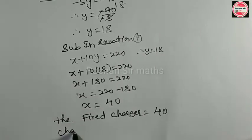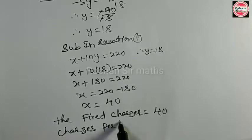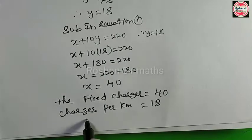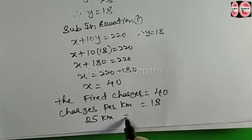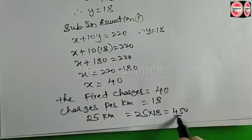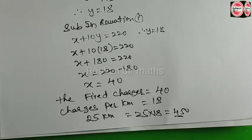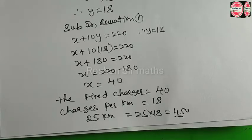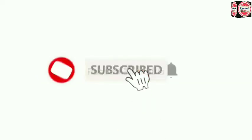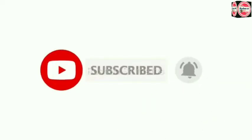Ab charges per kilometer: 18 rupees hai. Ek kilometer ko 18 rupees le raha. Agar aap 25 kilometer jaana chahte hain, to 25 ko 18 se multiply karenge, to iska answer aayega 450. To first 10 km ke 220 rupees, 15 km ke 310 rupees, aur 25 km ke 450 rupees le raha. Agar explanation achha laga ho to video ko zaroor subscribe kijiye aur bell icon ko dabana na bhooliye, taake naye aane waale videos aap tak jaldi pahunche.